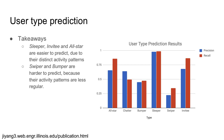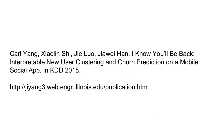Finally, although with different precision and recall, we are also able to predict user types by just looking at their very initial activity. Thanks for watching the video. For more details, please read our paper.